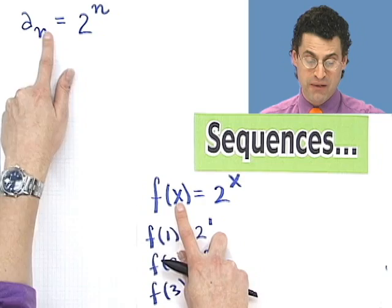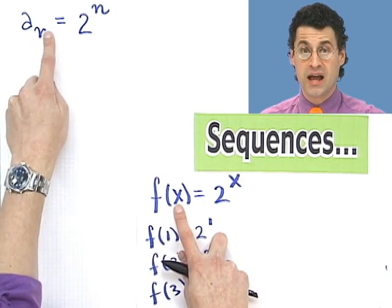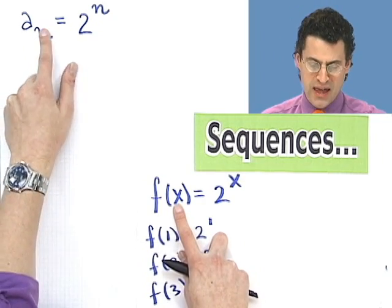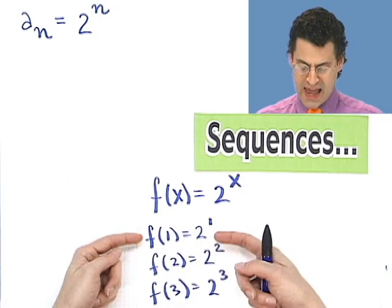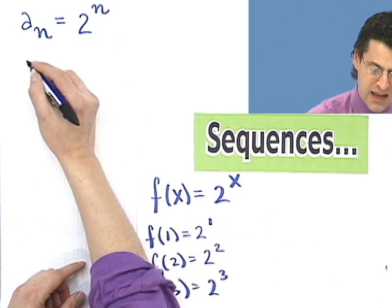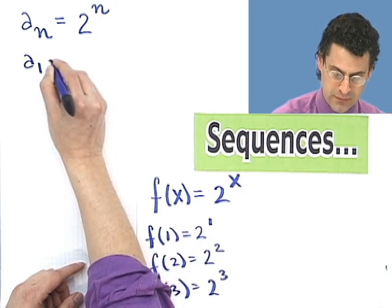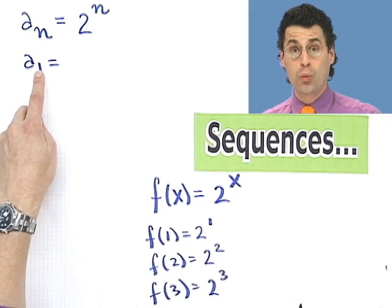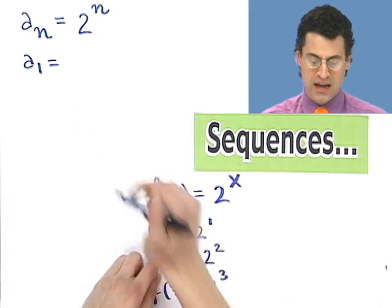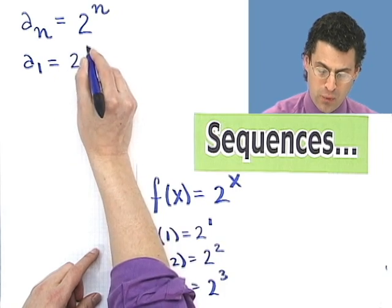So for example, if I plug in a natural number in for n, n for natural number, then I would plug that value in here. So the analog of this statement would be a sub 1. That means let n equal 1. Just like here, I'm saying let x equal 1.